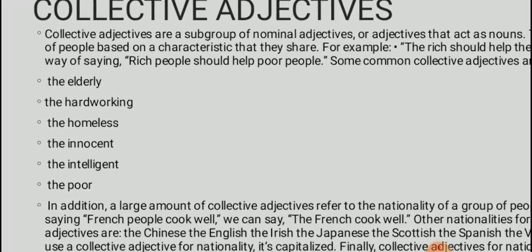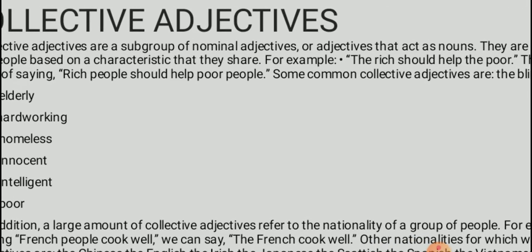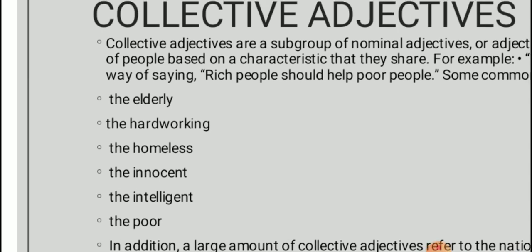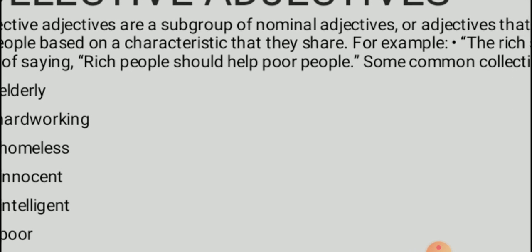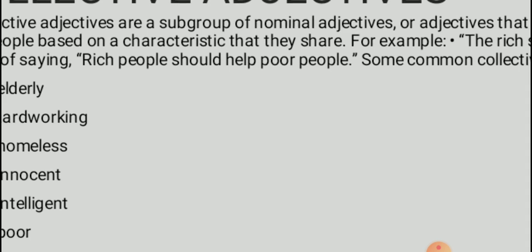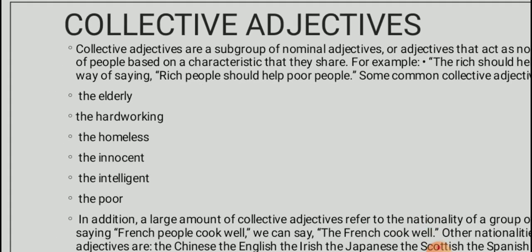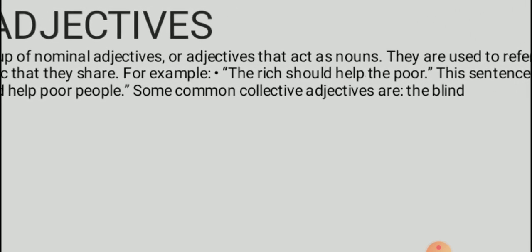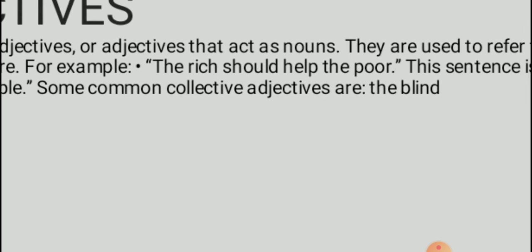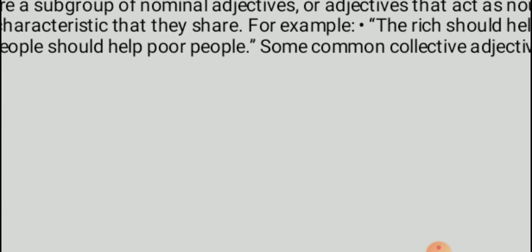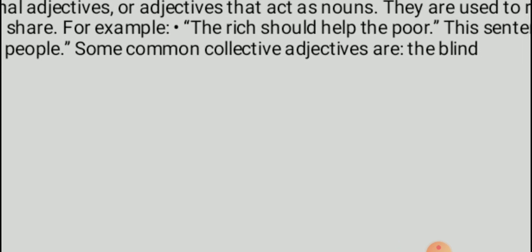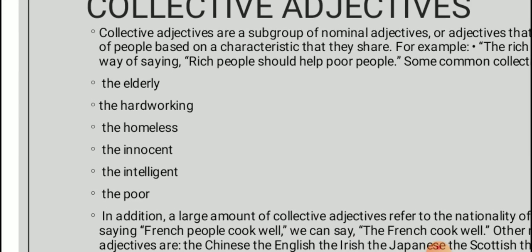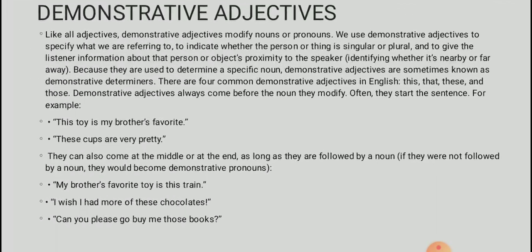Collective adjectives are a subgroup of nominal adjectives. Nominal adjectives act as nouns and are used to refer to a group of people based on a shared characteristic. For example, 'The rich should help the poor' — 'the rich' means all rich people and 'the poor' means all poor people. Other common collective adjectives include 'the blind,' meaning all blind people, 'the elderly,' 'the hardworking,' and 'the homeless,' meaning all people who do not own a home.